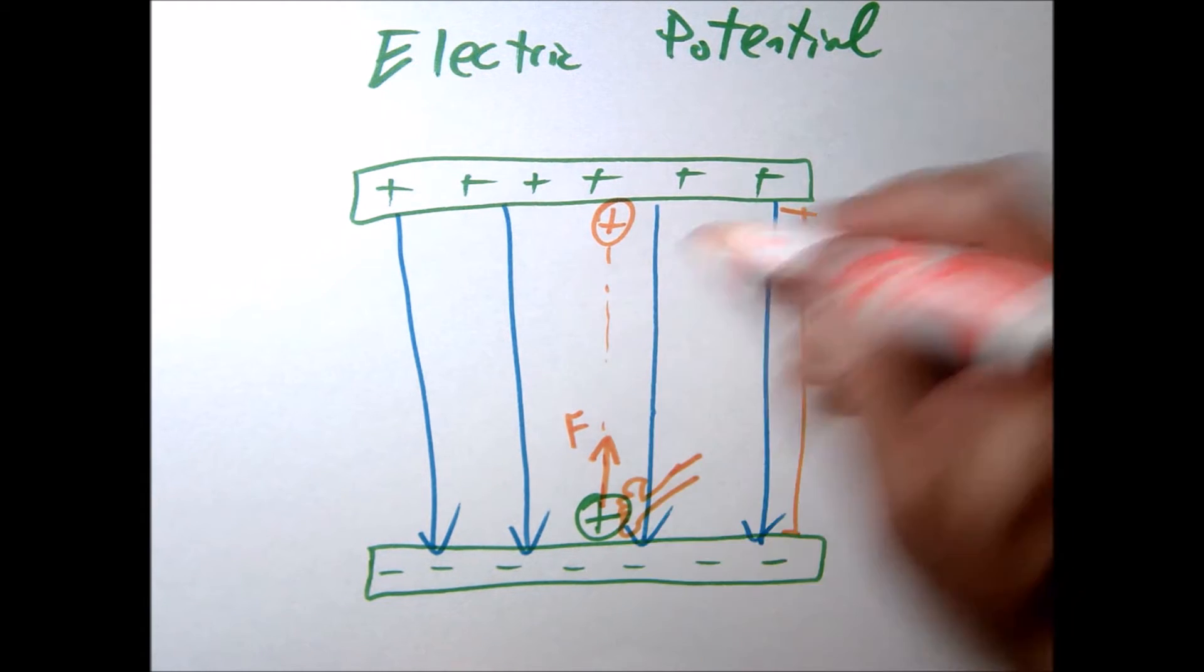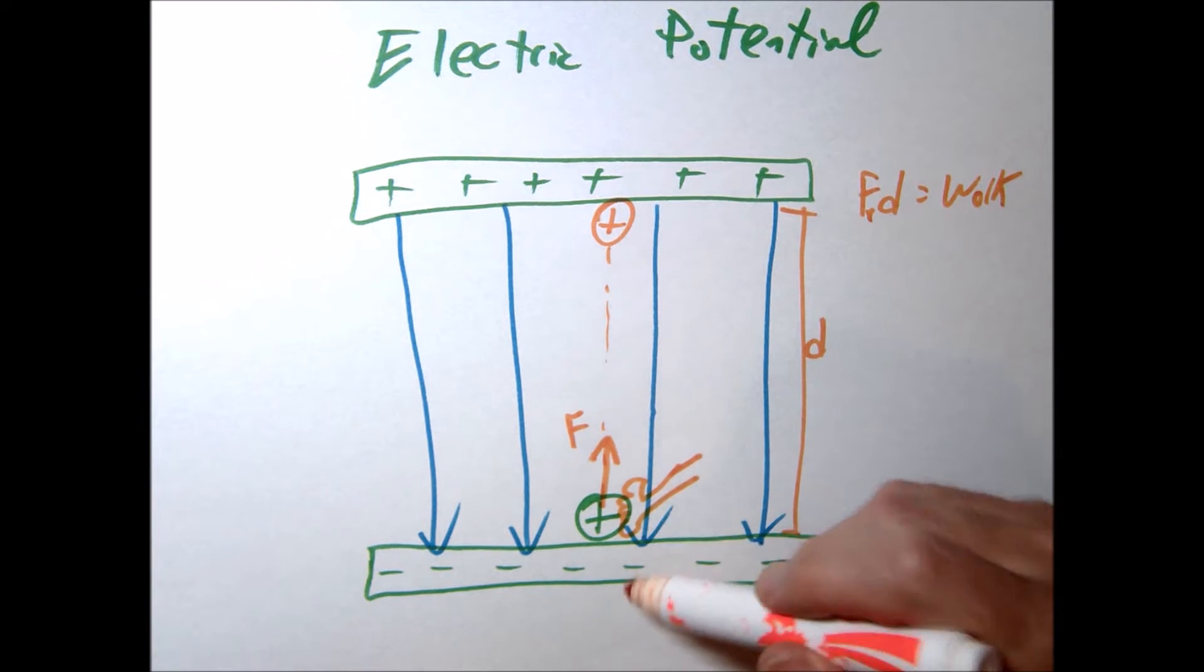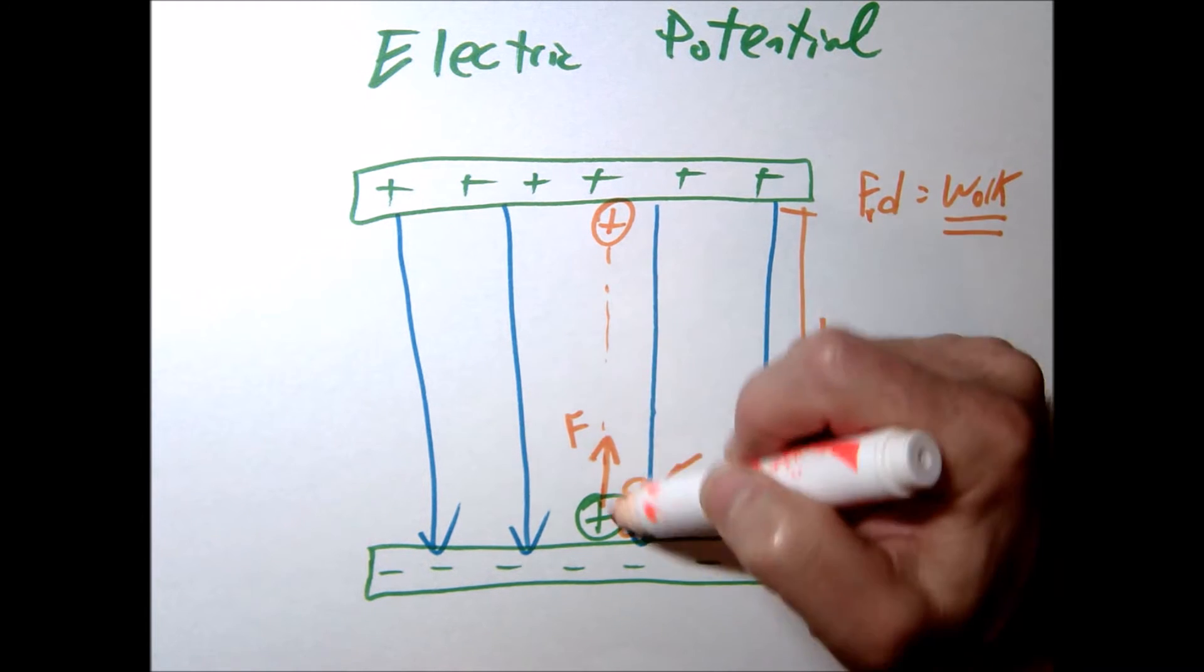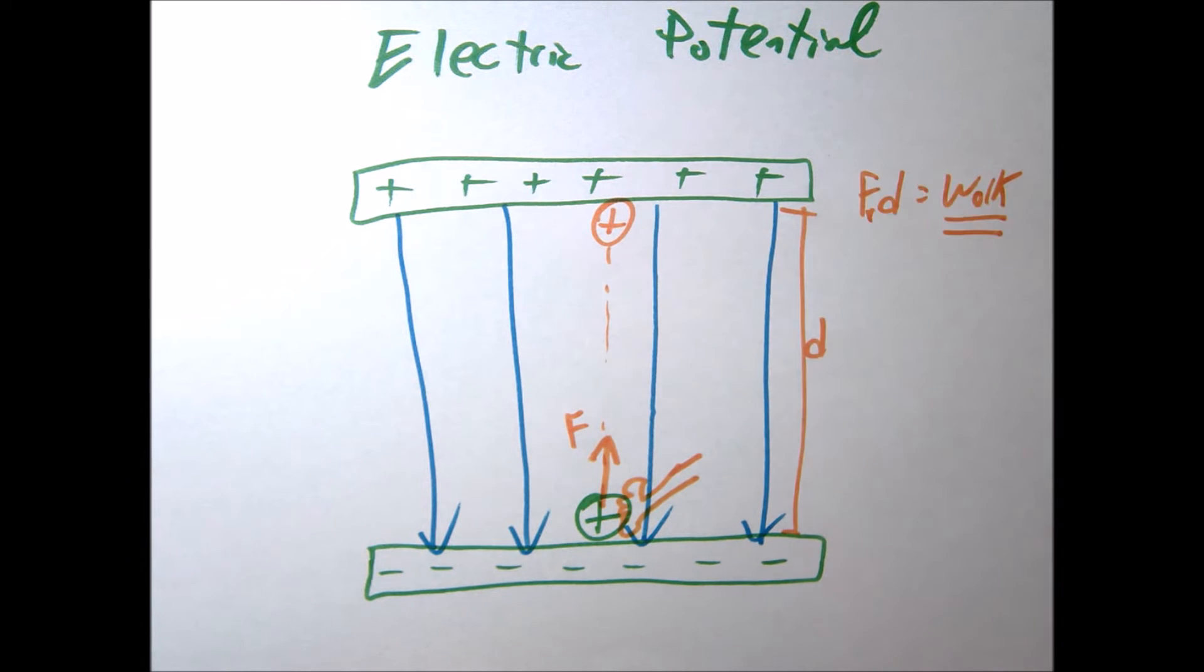Well, if I'm applying a force over a distance, what do we call that? Well, that's called work. So in other words, I'm doing work on that positive charge, pulling it up to the top plate. Well, then the question is, if I'm doing work, I'm using up some of my energy. So if I've used up energy, where did that energy go? We would say that energy is now stored in the charge itself. We would say this charge now has some electric potential energy.